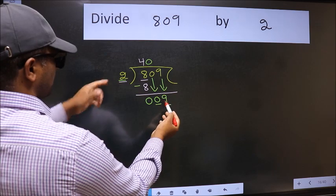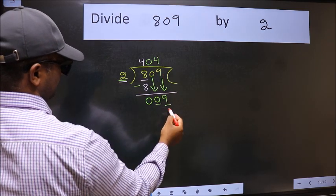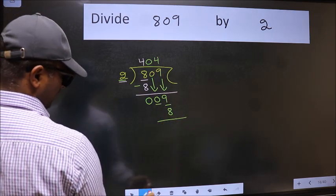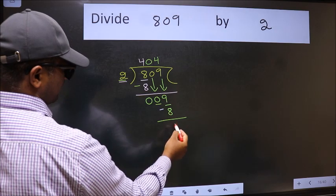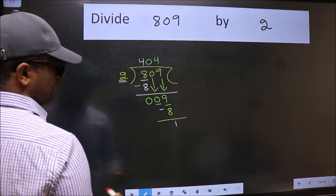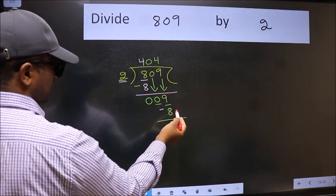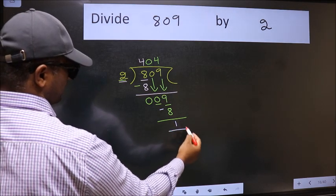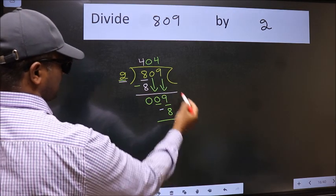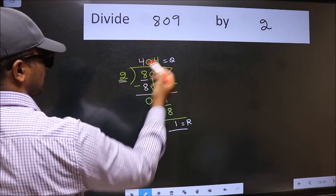A number close to 9 in 2 table is 2 fours 8. Now we should subtract. We get 1. No more numbers to bring it down. So we stop here. This is our remainder and this is our quotient.